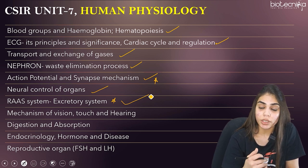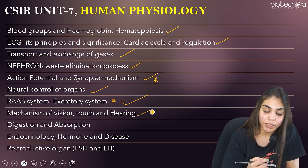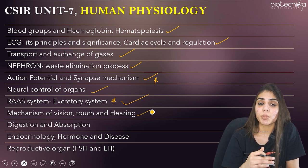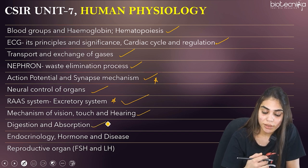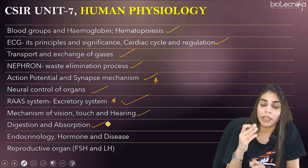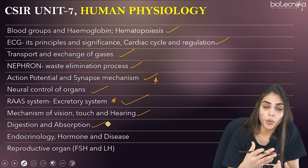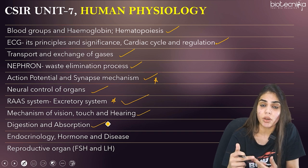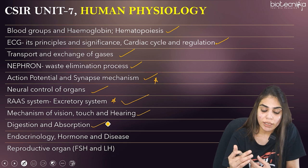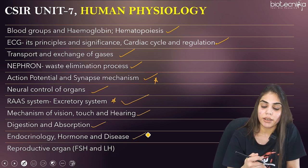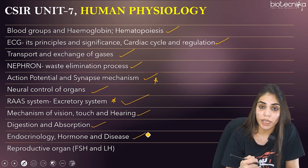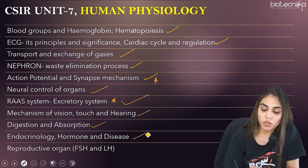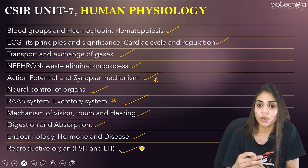Also learn about the mechanism of vision, touch, and hearing. Digestion and absorption should be learned in detail, as direct questions can be asked for two marks. Endocrinology is very important and simple — match-the-following questions ask you to match hormones to glands. Learn hormone-related diseases — hyperproduction and underproduction effects, all glands and their secreted hormones. The last is the reproductive system with a main focus on the menstrual cycle — LH and FSH production during ovulation.